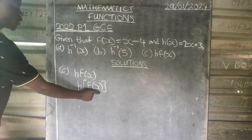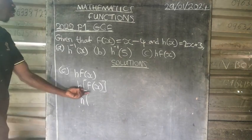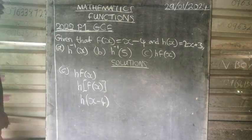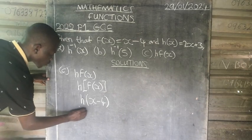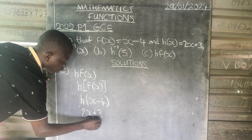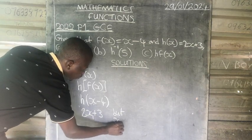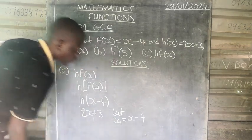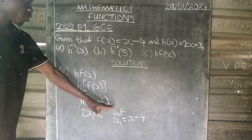So it will be h in square brackets, f of x in round brackets. So now this is our domain. On the next stage, we are going to get an expression for f of x, which is x minus 4. Then we get the function for h of x, which is 2x plus 3.